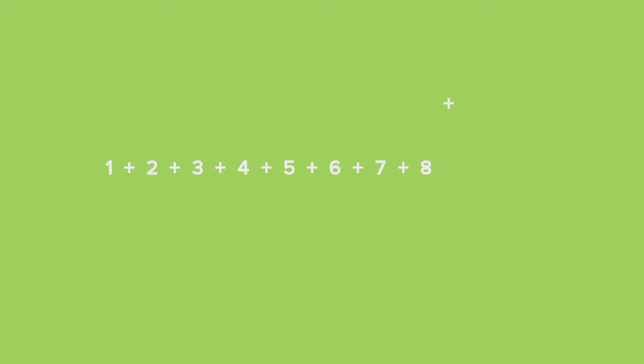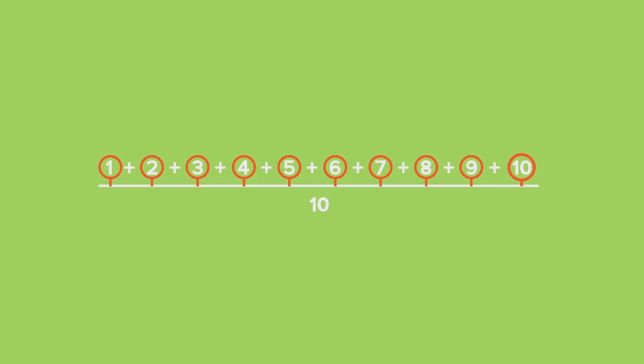The mean value is found by adding up all the data values and then dividing the sum by the number of datum. For example, if I had ten different values, the number of datum would be ten. Those values could be seven, four, three, and four again — but there would be how many numbers? Ten.